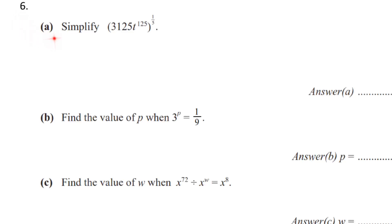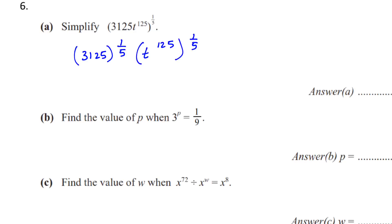Question 6a: simplify 3125t to the power of 125, bracket to the power of 1 over 5. This is very similar to the previous question. We write 3125 to the power of 1 over 5 and t to the power of 125 times 1 over 5. Putting 3125 to the power of 1 over 5 in the calculator gives 5, and 125 multiplied by 1 over 5 gives 25. So the answer is 5t to the power of 25.